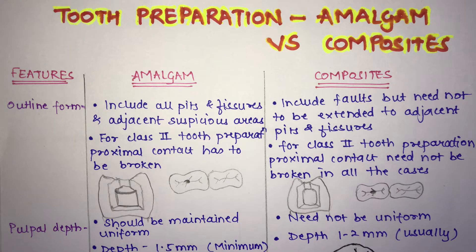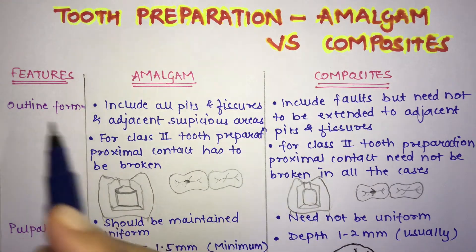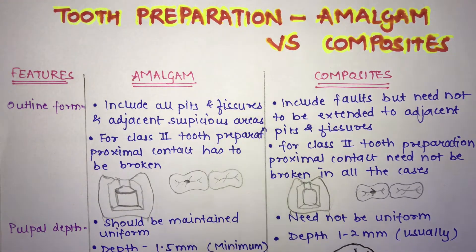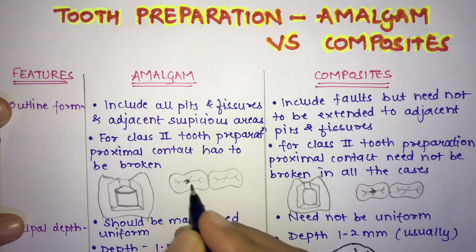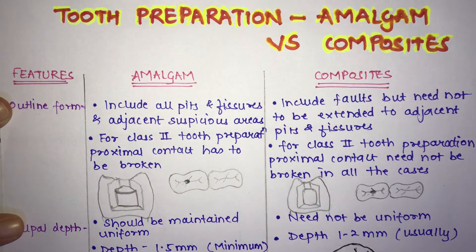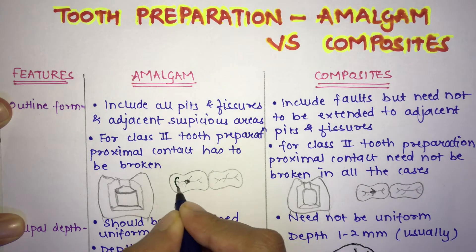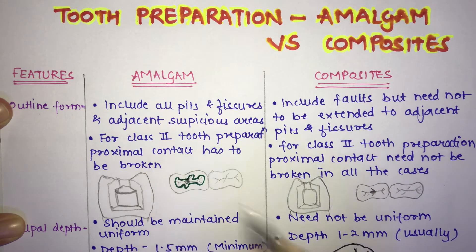Starting with the first difference — the outline form. In amalgam, it includes all the pits and fissures and adjacent suspicious areas. In composite, it includes only the caries; you do not have to extend the tooth preparation to adjacent pits and fissures. So when you do a tooth preparation in amalgam, you follow the complete outline form.